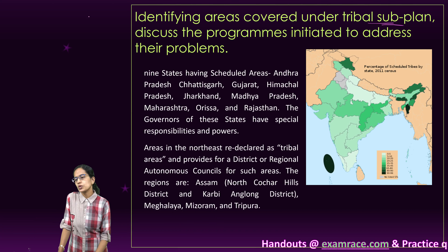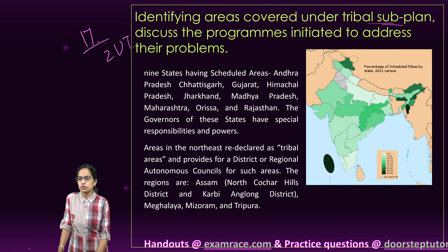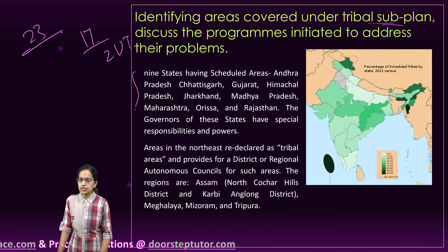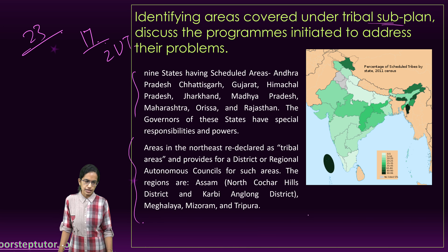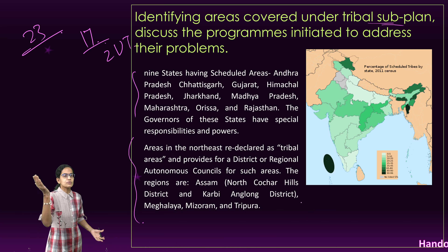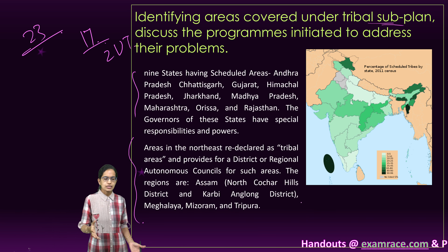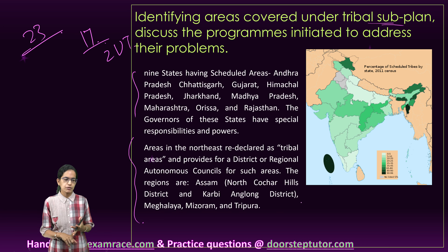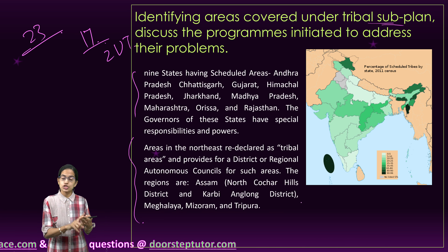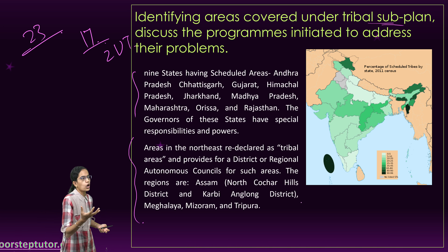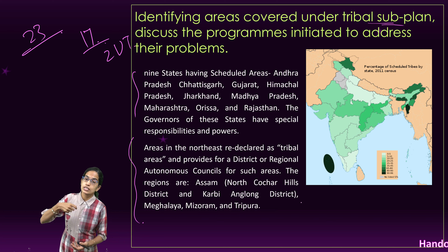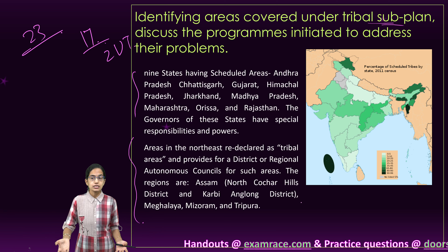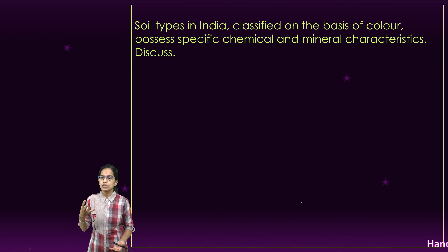The next question is to identify areas under tribal sub-plans. Initially there were 17 states and 2 UTs; now 23 states have tribal programs running. Various centrally sponsored and state programs include special grants, special initiatives, special hostels, scholarships, finance schemes, institutes of excellence, and marketing of minor forest produce such as bamboo and allied activities in the northeast. Projects from the World Bank and strengthening of existing institutions also boost tribal areas.